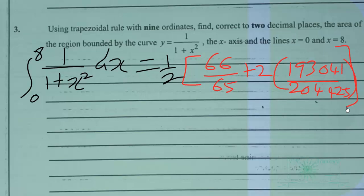If you like to work in decimals, let's simplify this. So this will give us 1 over 2 times 66 over 65, which is the same as 1.015385.